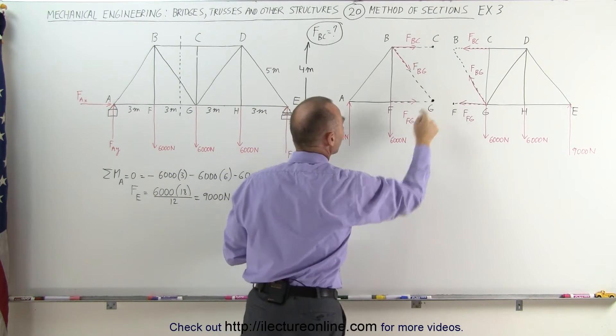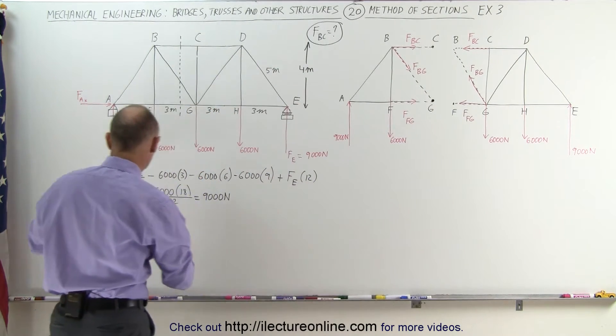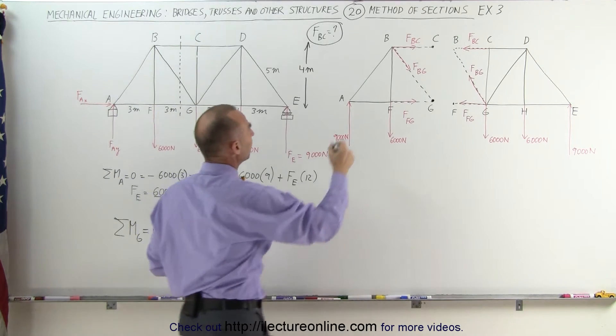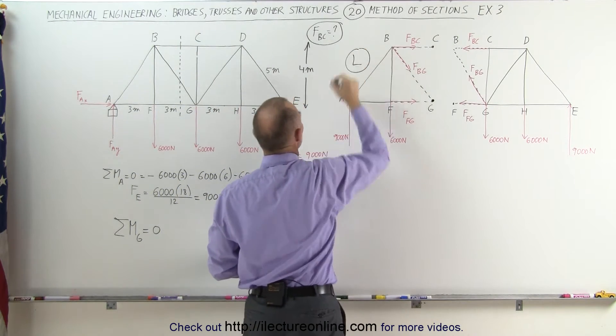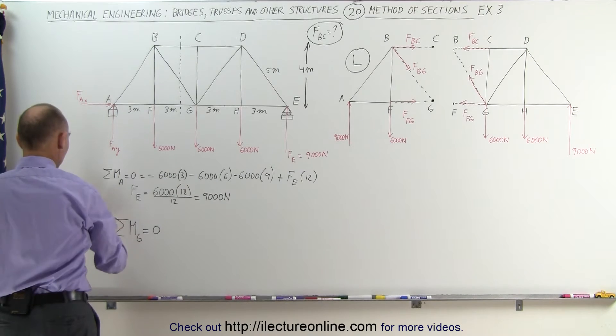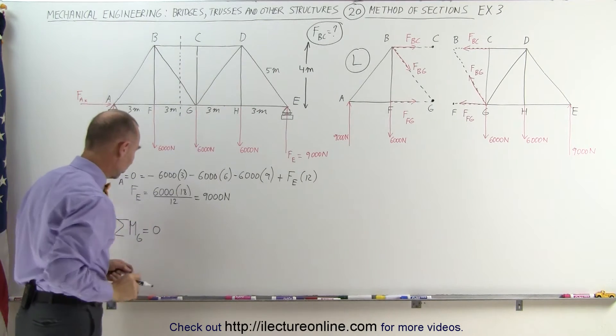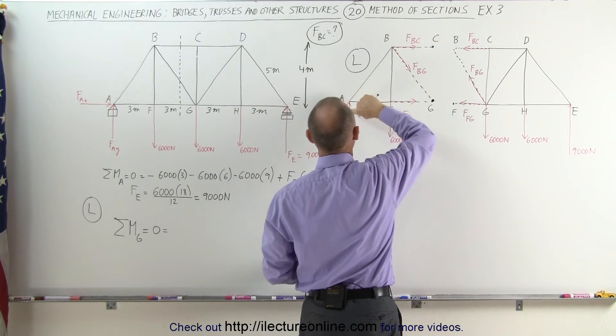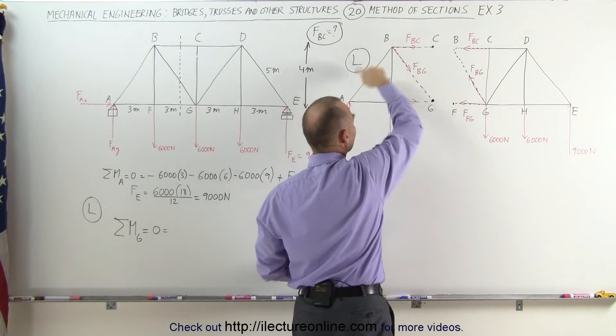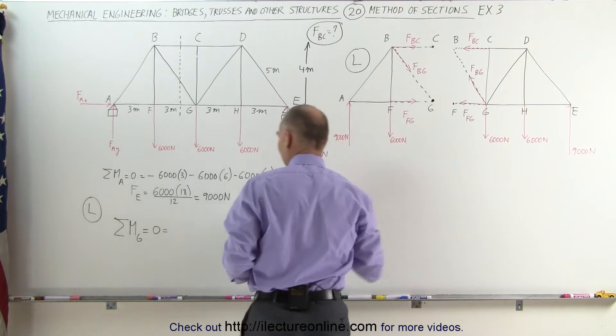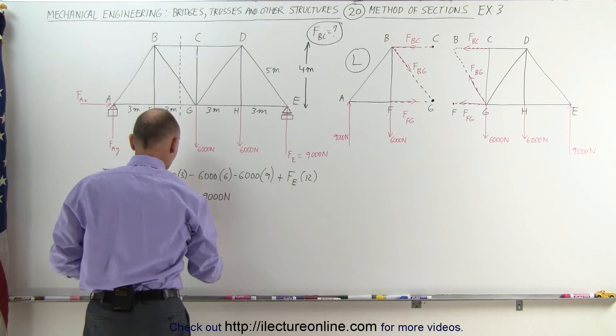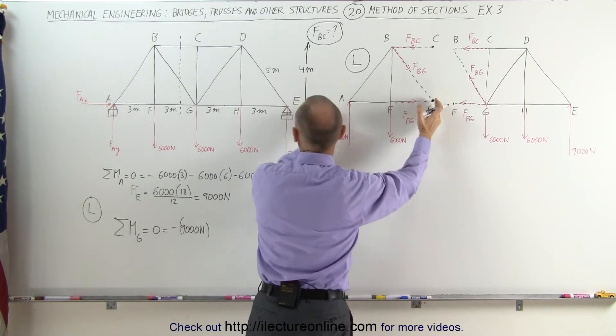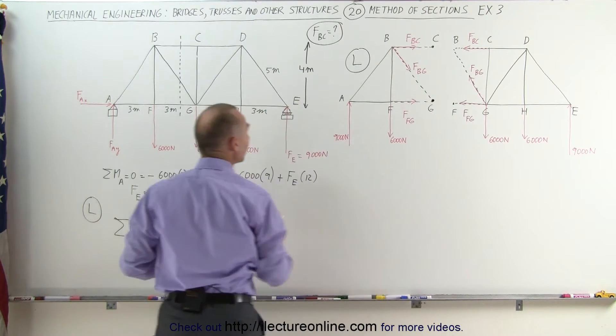So let's go ahead and sum up the moments about point G on the left section of the bridge. The sum of the moments about point G is equal to zero. Notice I'll put an L here, this is the left side of the bridge. Now, what are all the moments about point G? Notice we have 9,000 Newton force making this a clockwise motion, that means negative 9,000 Newtons. And it's at a distance of 6 meters, 3 meters and 3 meters total of 6 meters, as you can see over here, from the pivot point.